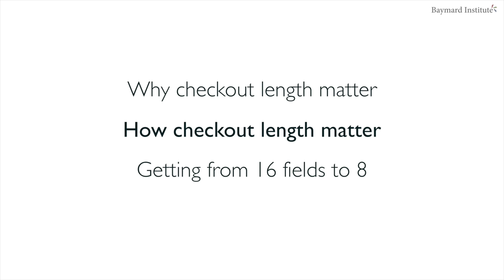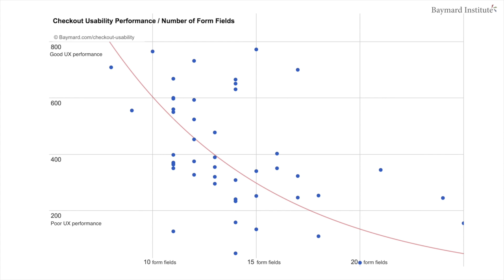When we talk about checkout length, we really need to talk about the actual number of form fields. Here I've plotted checkout user experience performance against the number of form fields — 10, 15, 20 form fields — and each dot represents one of the 50 largest e-commerce sites and their performance. As you'll see, there is a clear correlation between checkout UX performance and the number of form fields. So the real question we should ask ourselves is not how many steps we have in our checkout flow, but rather how many form fields.